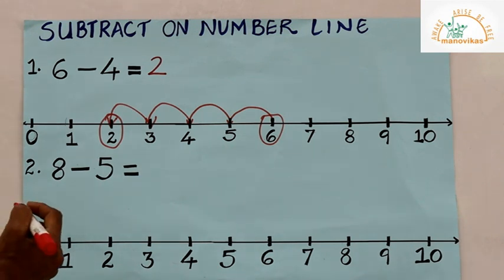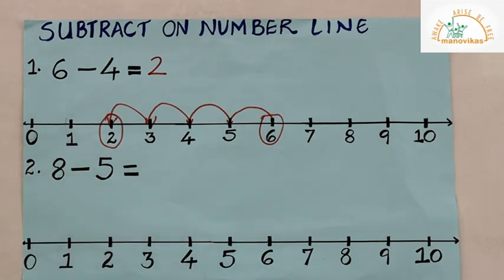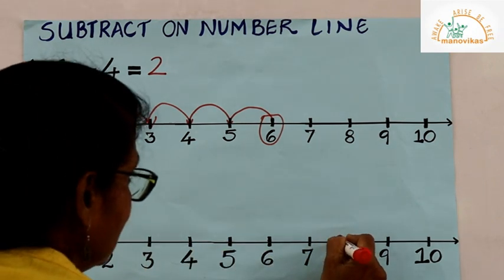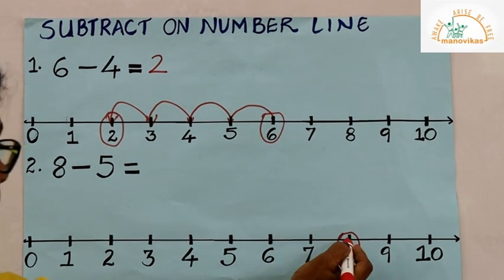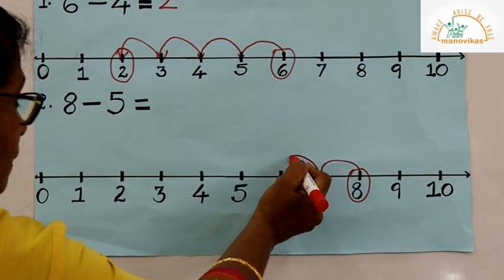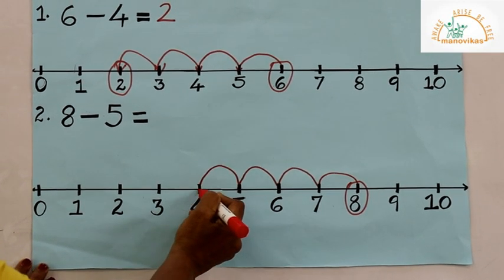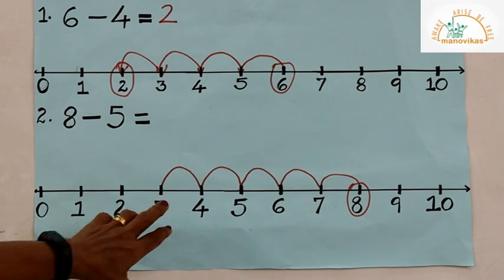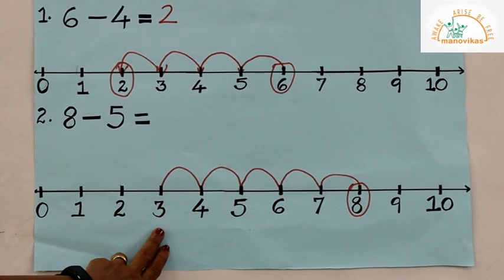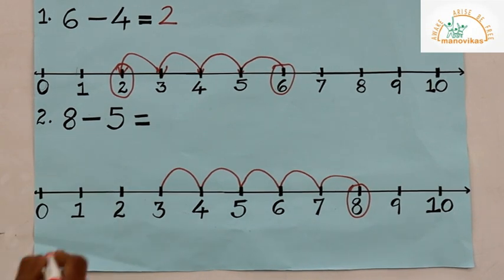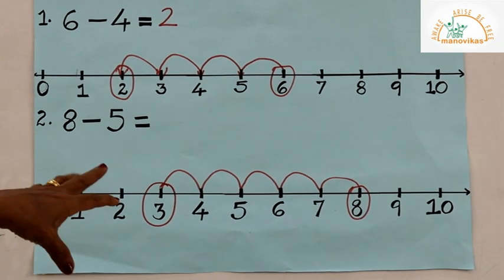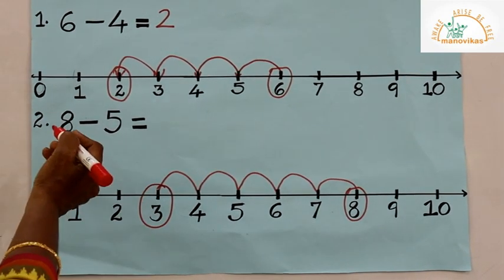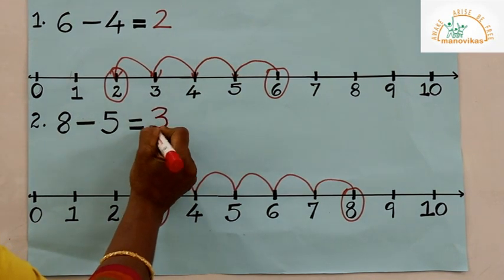Let's go to the next number line: 8 minus 5. The number 8 is here on the number line. We take 5 jumps towards the left from 8: 1, 2, 3, 4, 5 — and we reach number 3. That means 8 minus 5 gives us 3. The difference between 8 and 5 is 3.